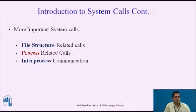The process related system calls in Unix include fork, execute, wait, and exit. Using execute, an executable binary file can be converted into a process. Inter-process communication is a set of programming interfaces that allow a programmer to coordinate activities among different program processes that can run concurrently in an operating system. Processes can communicate with each other using the shared memory concept.